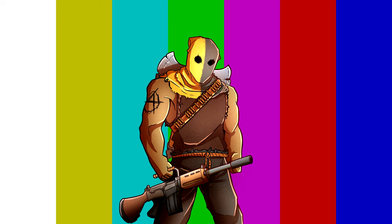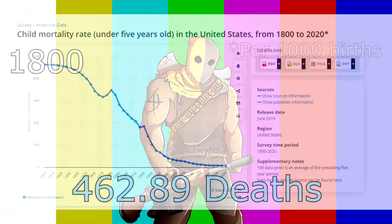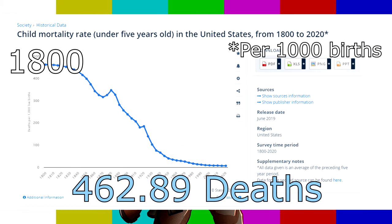The problem with this argument is that we are talking about a century of numbers. In 1800, the rate was 462.89 deaths. By 1865, that number had dropped to 325.74 deaths.